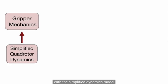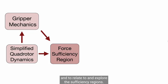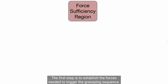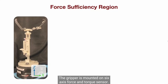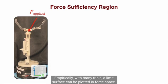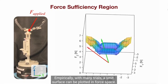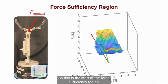With the simplified dynamics model and the gripper mechanics, we can start to validate the design and to relate to and explore the sufficiency regions. The first step is to establish the forces needed to trigger the grasping sequence. The gripper is mounted on a 6-axis force and torque sensor. Then a random force is applied to the center of the gripper. Empirically, with many trials, a limit surface can be plotted in force space. So this is the start of the force sufficiency region.